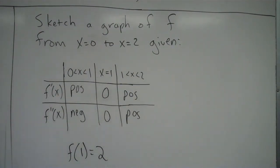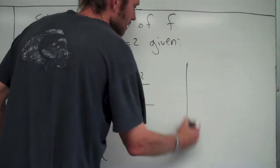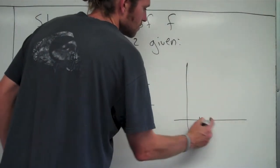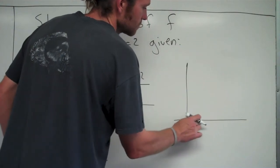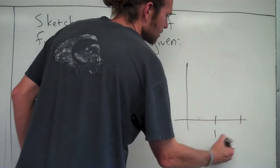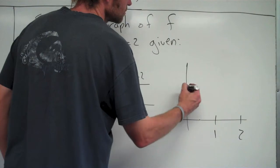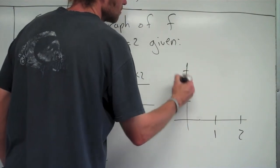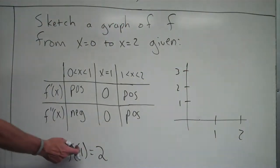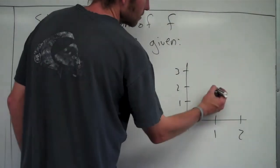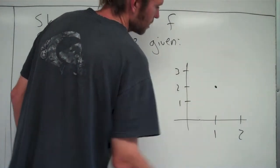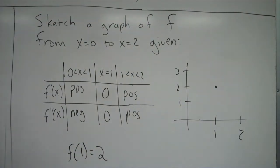And I've told you also that f of 1 equals 2. So let's start with that again. I like to start with that. Let me go ahead and draw on here the graph. So x equals 1, x equals 2, 1, 2, 3. So I know for this graph that at x equals 1, the y value is 2. So I'm going to put a point right there at the point 1, 2. I know my graph has to go through there.